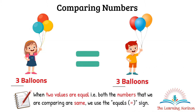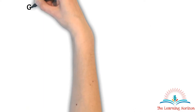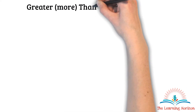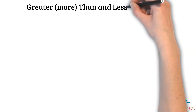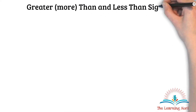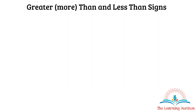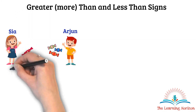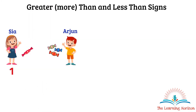Now let us move on to understand the greater than and less than signs. Again we have Sia and Arjun with some candies. Sia has 1 candy and Arjun has 3 candies.